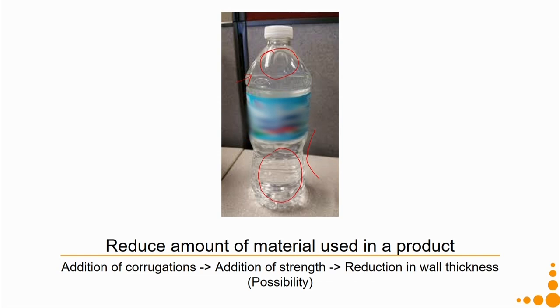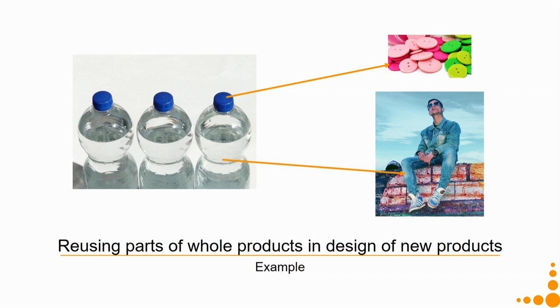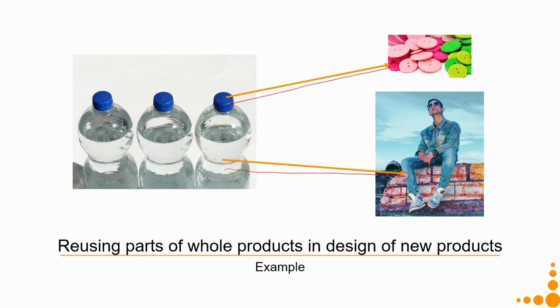Another green design concept is reusing parts in new products—for example, PET bottles can be used to make denim jackets or trousers, and bottle caps can be reused as buttons. However, this doesn't fully solve the problem: collection is difficult, a large chunk still ends in landfills or oceans, and the conversion process requires additional energy for cleaning, crushing, and processing.